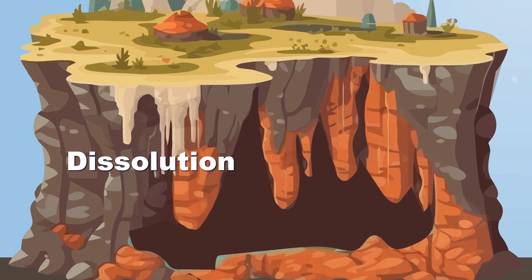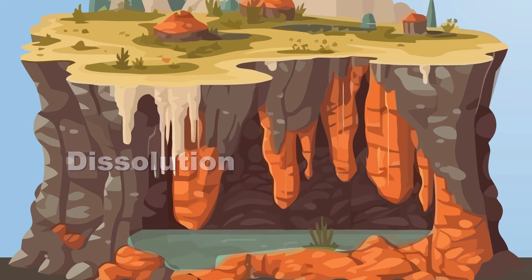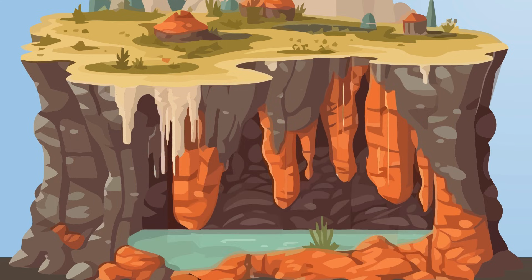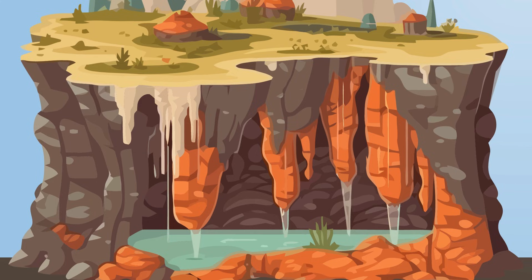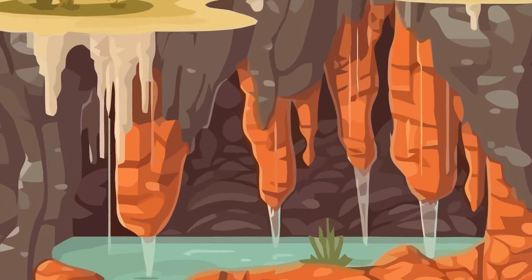Dissolution is the name of what this process is called. Dissolution can occur with evaporite rocks as well, and water can break those atomic bonds without being acidic. Fractures in the rock that the water dissolves increase in size over thousands of years, forming a cave as it evolves.